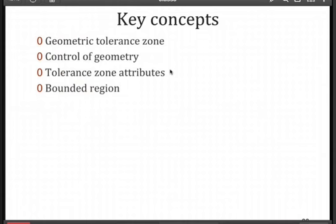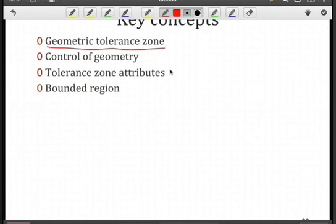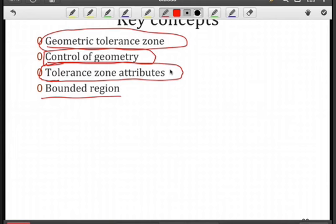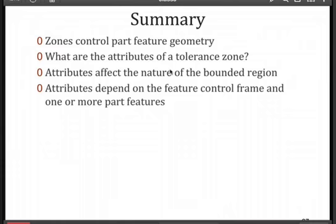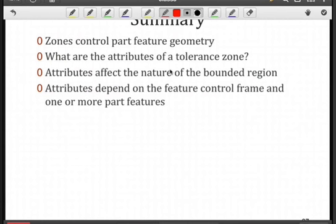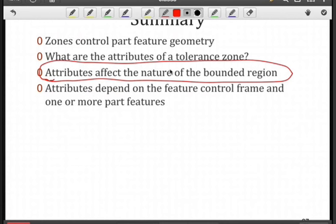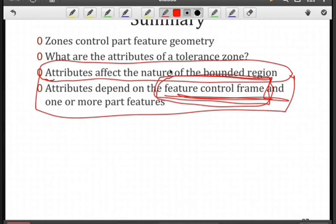At this stage, you should know the major attributes of a geometric tolerance zone: the shape, the size, the dimensionality, and how it's oriented or located in space in some cases. What we're trying to do is control specific geometry — such as an axis — and we need to identify tolerance zone attributes so we can create this bounded region. In summary, your zones are going to control part feature geometry. The attributes — size, dimensionality, orientation, location — will depend on the feature control frame. You need to be able to identify that frame and know what it's referring to in terms of part features.